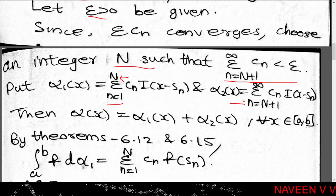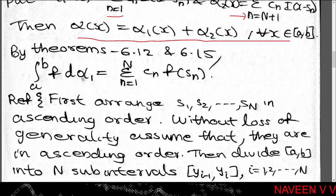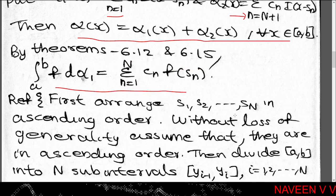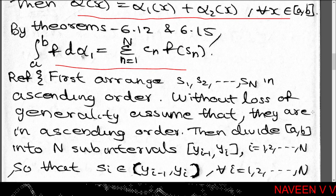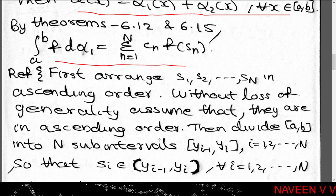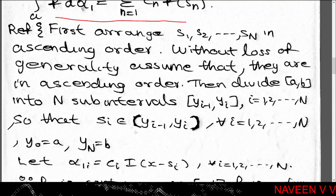Then α₁(x) + α₂(x) = α(x) for all x in [a,b]. Now we apply theorems 6.12 and 6.15, which give us ∫(a to b) f dα₁ = Σ(n=1 to N) cₙ · f(sₙ). We arrange the points s₁, s₂, ..., sN in ascending order.